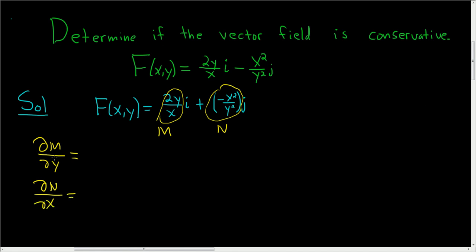Now if these are both continuous and equal then the answer is yes. But if they're not equal or not continuous somewhere then the answer is no. So ∂M/∂y - we're treating 2/x as a constant, so this is simply going to be 2/x.